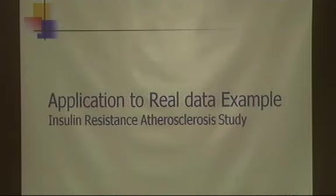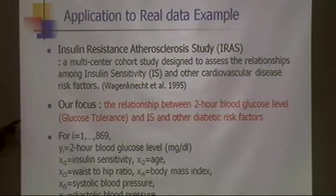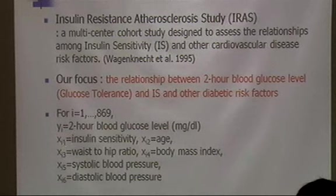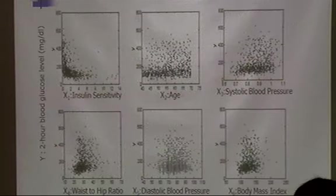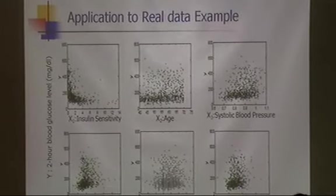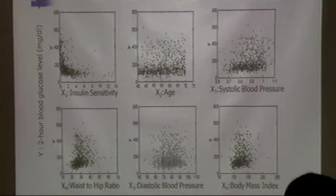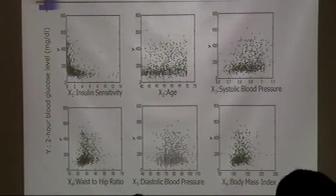For the real data application: data come from the Insulin Resistance Atherosclerosis (IRAS) Study, focusing on the relationship between glucose level and insulin sensitivity along with other diabetic risk factors. The response variable is 2-hour blood glucose level; predictors include insulin sensitivity, age, obesity-related variables, and blood pressure — six predictors total.